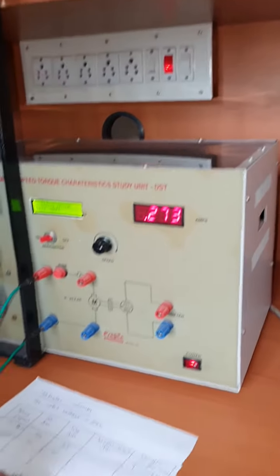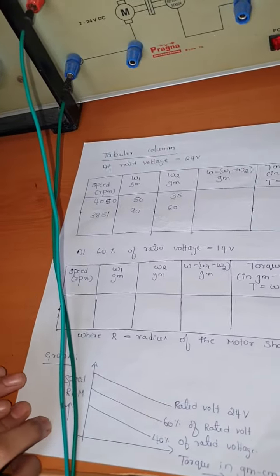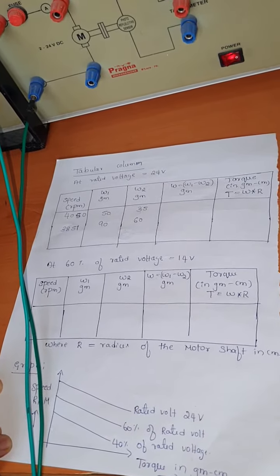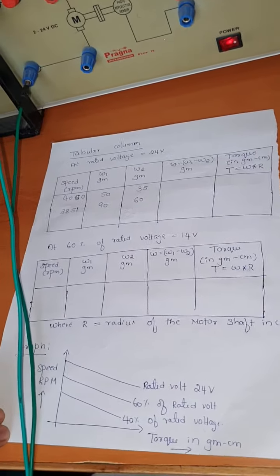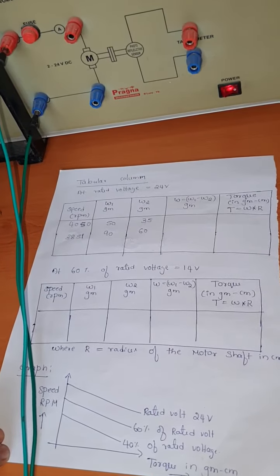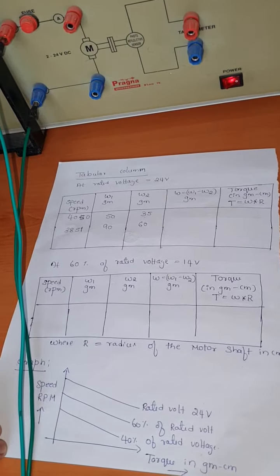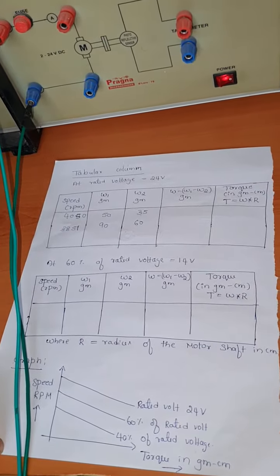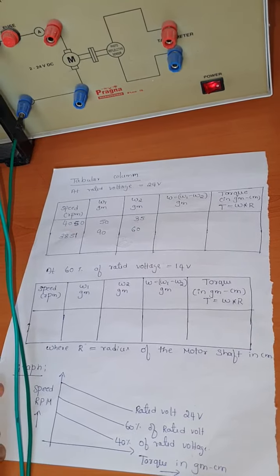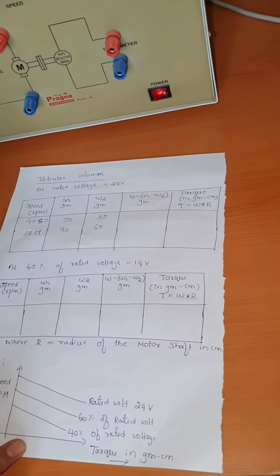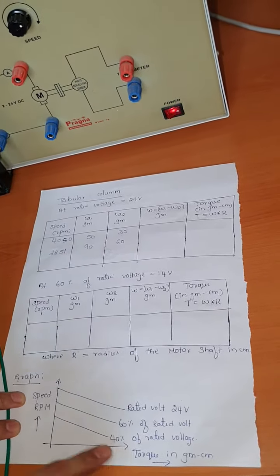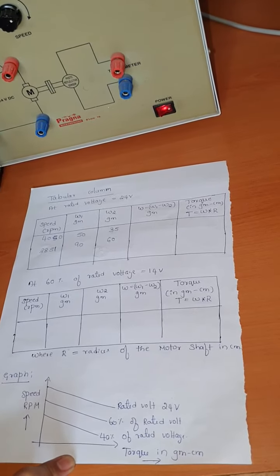Similarly, we do it for 40% of the rated voltage, which is approximately 9.6V. Again, use the speed knob to reduce the voltage to 9.6V using the multimeter, release the load first, then add it gradually. Note W1, W2, and speed for each reading. From all three sets of readings, we observe that speed is inversely proportional to torque — as speed increases, torque reduces. This gives us the speed-torque characteristic graph of the DC servomotor.